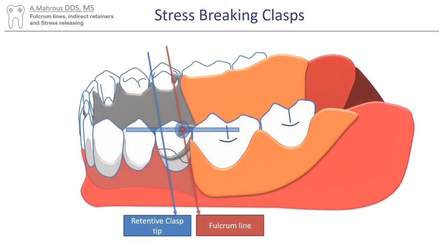Let's take a look at how that happens. Here is a Kennedy Class 1 case. As you can see here, the fulcrum line connects the distal-most rests of the RPD. In this case, this RPD has cast circumferential clasps on the abutment teeth.